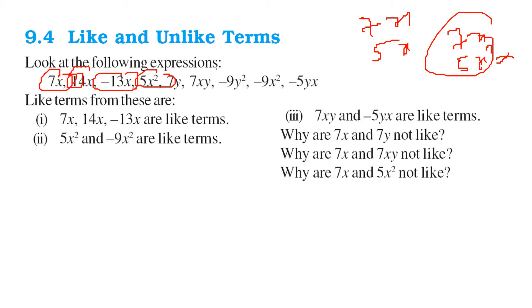And 5x square, so anything with x square will be the like term. So 5x square, so minus 9x square is a like term.